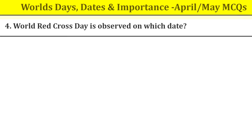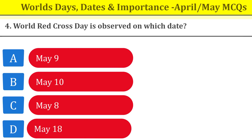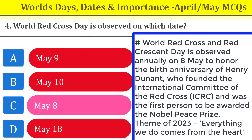Question number four: World Red Cross Day is observed on which date? World Red Cross Day is observed on 8th May to honor the birth anniversary of Henry Dunant, who founded the International Committee of the Red Cross (ICRC) and was the first person to be awarded the Nobel Peace Prize. The theme of 2023 was 'Everything We Do Comes From the Heart.'